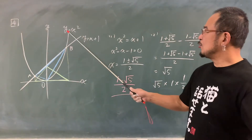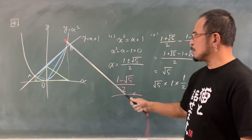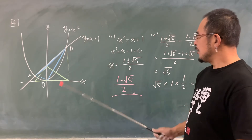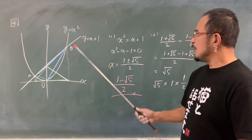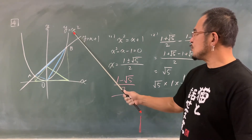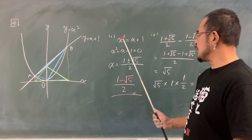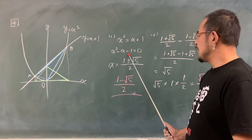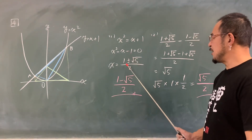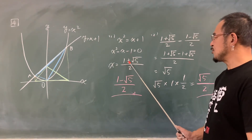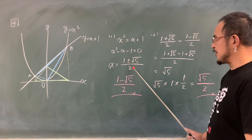YイコールX²と、YイコールX+1が2点で交わっています。Aの座標はということで、X²イコールX+1、移項して、因数分解できませんので解の公式、2a分の-bプラスマイナス√(b²-4ac)で、こんな形になります。